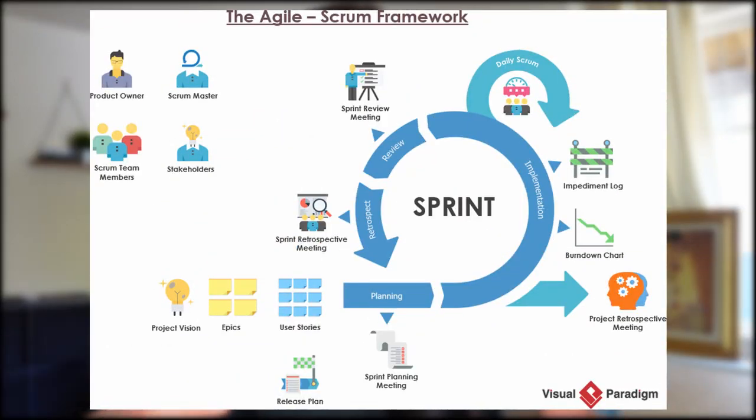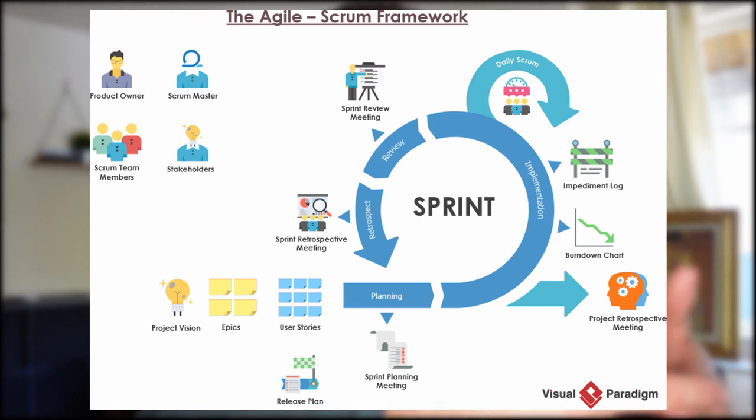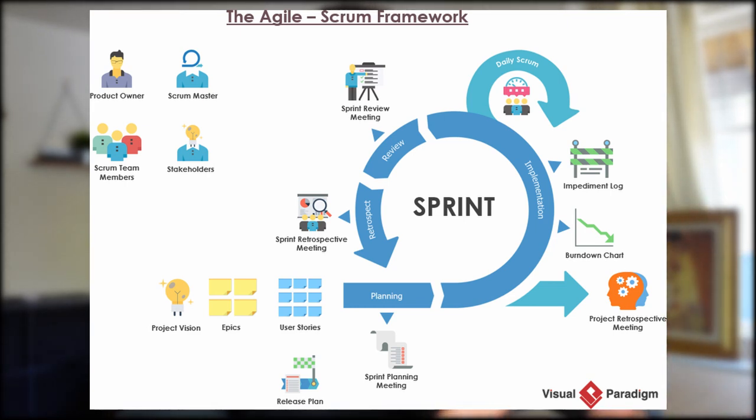But when you work at a large tech company and the software product you're working on is years away from release, planning is a vital factor in making sure that you deliver on the features you're supposed to. The structure of the agile framework will vary based on what company you work for, but my experience at Microsoft has basically been the following. You start with user requirements, and if you work a lot with PMs like I do, you'll hear the acronym OKRs thrown around, which basically just means objectives and key results.